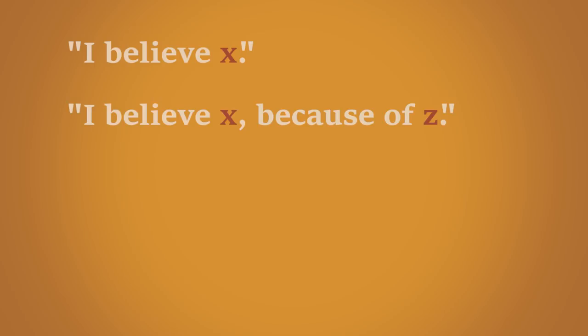When we make a claim, for example, I believe in X, we ought to give some rational justification on why we believe in X. So, a proper way to present your claim is: I believe X because of Z. Z being some argument or observable evidence.